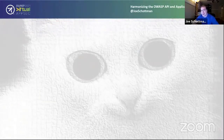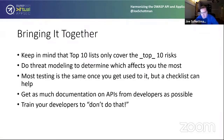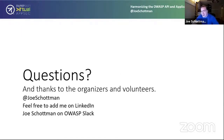Bringing it together and wrapping up: keep in mind the top 10 lists only cover the top 10 — that doesn't mean you don't have to care about numbers 11 and beyond. Be aware there are other lists to consider. Do threat modeling to make sure you're doing the most accurate testing for what matters most. A lot of testing will be the same between web app and API tests, but having a checklist for the things specific to or more common in APIs ensures you don't miss anything. Get as much documentation from developers before testing as possible, and as much as possible train your developers. Thank you to the organizers, volunteers, and everyone for your time.